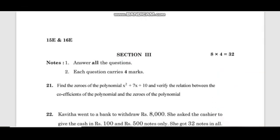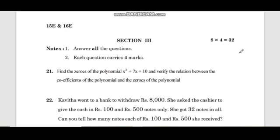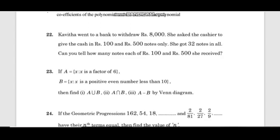Section 3 has 8 questions with 4 marks each, totaling 32 marks. First problem: Find the zeros of the polynomial x square plus 7x plus 10 and verify the relation between the coefficients of the polynomial and zeros of the polynomial.